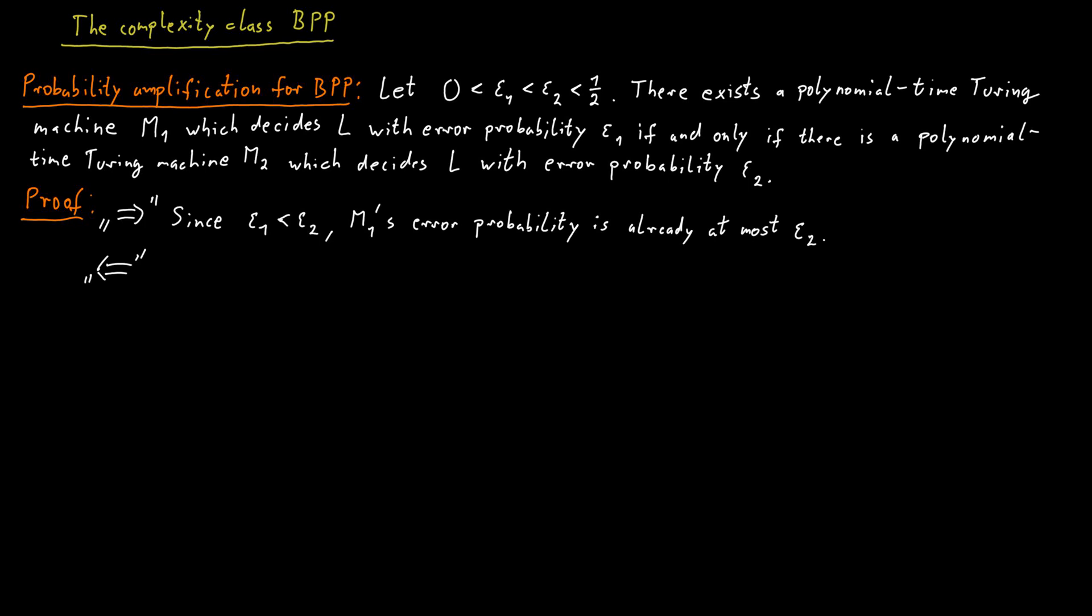To make sure that there is no tie we should run the machine M2 an odd number of times. So take some integer k and then we run the machine M2 2k plus 1 many times. So this ensures that it's an odd number of times and we don't get a tie in the result. And then we simply return the majority result.